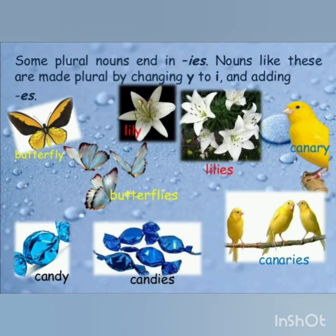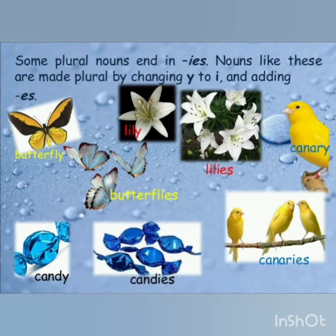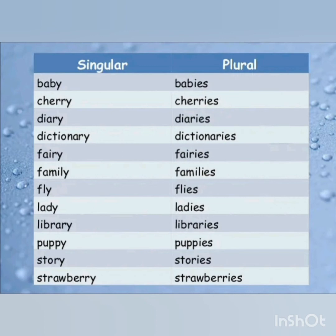Some plural nouns end in I-E-S. The rule is: if there is a consonant and a Y at the end of the noun, then in plural form, Y will change to I, and then we will add E-S. For example, plural of butterfly is butterflies, in which we have changed Y to I and added E-S at the end. Similarly: fly becomes flies, candy becomes candies, baby becomes babies, diary becomes diaries, family becomes families, story becomes stories.